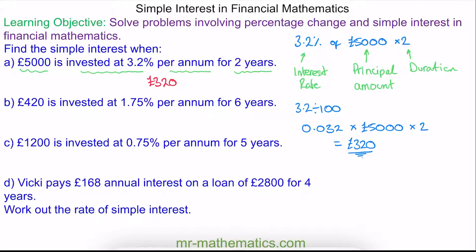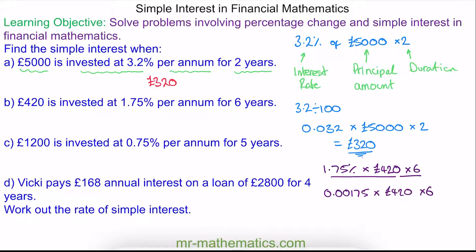For question B, we have our interest rate of 1.75%, multiplied by our principal amount of £420. This is the interest for one year, so we multiply it by six for six years. Converting the percentage to a decimal gives 0.0175, multiplied by £420, multiplied by six. Our interest at the end of six years is £44.10.